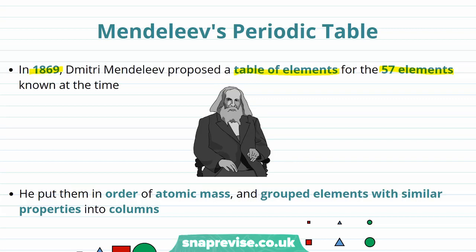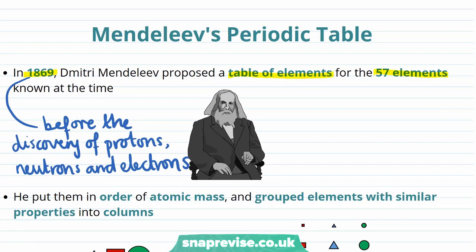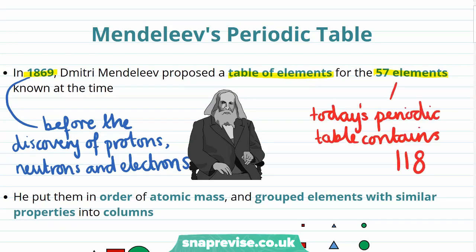If you've seen our video on the development of the atom, you'll know that this was before the discovery of protons, neutrons, and electrons. It's also important to note that there was only 57 elements that had been discovered at the time, whereas today's periodic table contains 118.